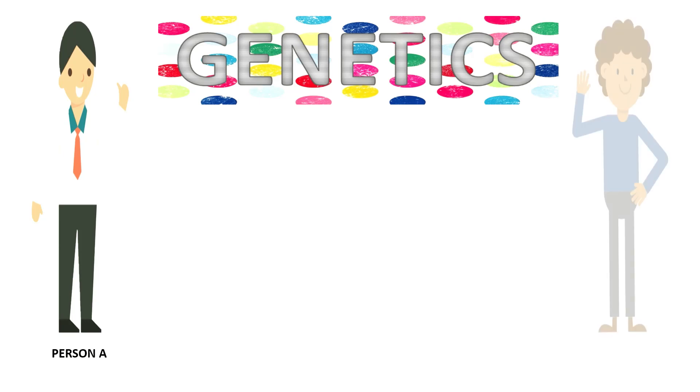Take these two people for instance, person A and person B. Both have hairs. This means that their body must have the information or recipe to form hair on their head.